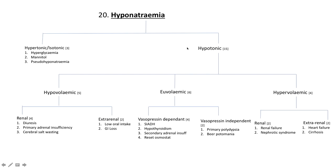The first point of departure is: is the hyponatremia hypotonic or not? If it's isotonic or hypertonic, think of three etiologies: hyperglycemia, mannitol, or pseudo-hyponatremia. For hypotonic hyponatremia there are 15 possible etiologies. For the hypovolemic variety, the two flavors are renal versus extra-renal. Under renal: diuresis, primary adrenal insufficiency such as Addison's disease, and cerebral salt wasting. Extra-renal: low oral intake or GI losses such as vomiting and diarrhea.